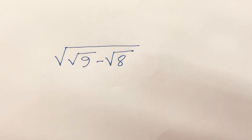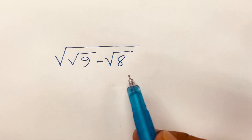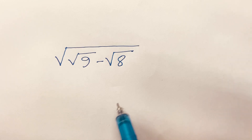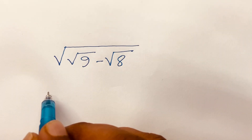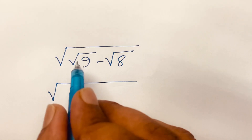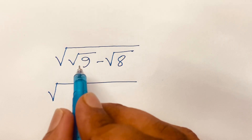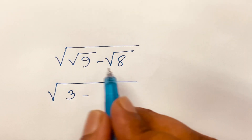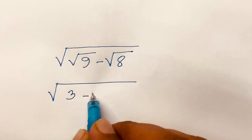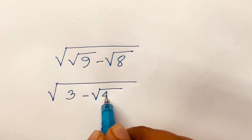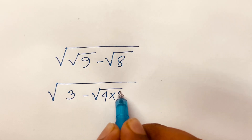How to solve square root of (√9 - √8). First, √9 equals 3, and √8 can be written as √(4 × 2), which simplifies to 2√2.